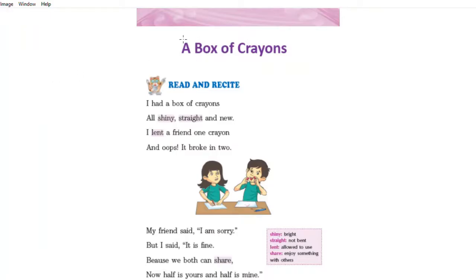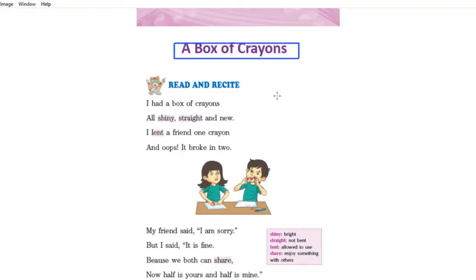Children, open page number 19 for the poem 'A Box of Crayons.' We will read and recite the poem first. I will read the complete poem and you will listen to me. Then I will read each word and you will repeat after me, and thereafter I will read one complete sentence and you will repeat after me.